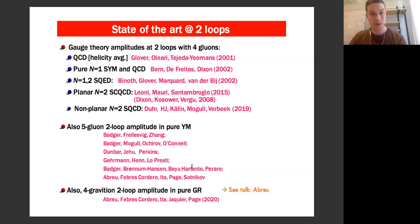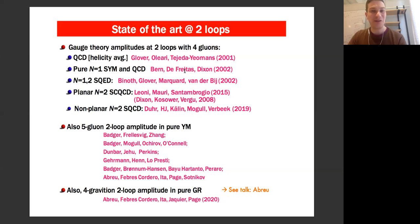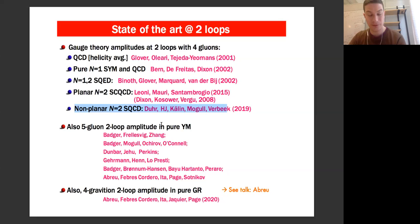Let me flash some results at two loops. These are state-of-the-art calculations going back to the early 2000s and up to 2020. I want to point out this particular calculation by Bern, Lance, and Freitas, where they computed a two-loop N equals one super-Yang-Mills amplitude. I should also point out that there's work from last year where we computed a full non-planar N equals two super-QCD amplitude using similar methods to those in this talk, which will be useful for things I discuss later.